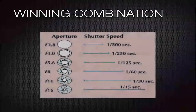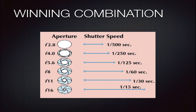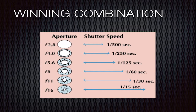So what's the winning combination? You can see that f2.8 at 1/500th of a second may equal a perfect exposure in a given situation. But the same exposure could be achieved at f11 at 1/30th of a second. This is assuming the ISO is stationary — say ISO 100 or 400 consistently — so that's not a moving part of the equation.